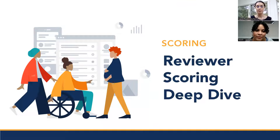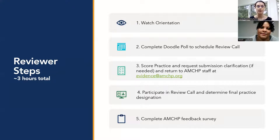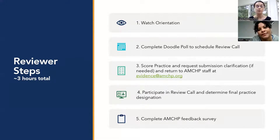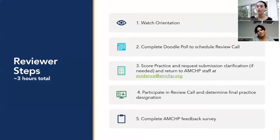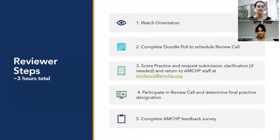Now that we've gone over the submission process, we're going to do a deeper dive into what you will be doing as a reviewer. It takes about three hours total to be a reviewer. The first step is to watch the orientation — that's this video. Next, you'll complete a doodle poll to schedule your review call, where you come together with two other fellow reviewers to discuss the practice you were assigned, determine if it met the criteria needed, and decide on the final designation.